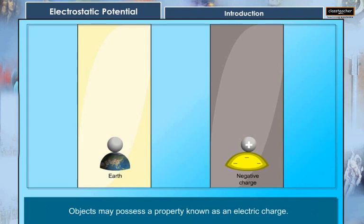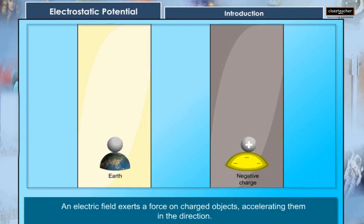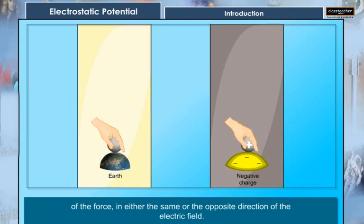Objects may possess a property known as an electric charge. An electric field exerts a force on charged objects, accelerating them in direction of the force in either the same or the opposite direction of the electric field.